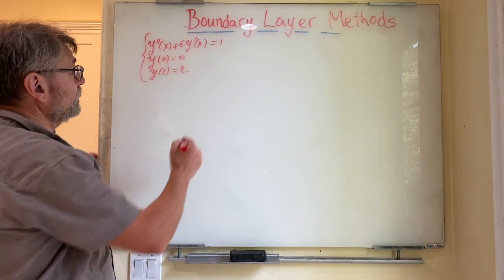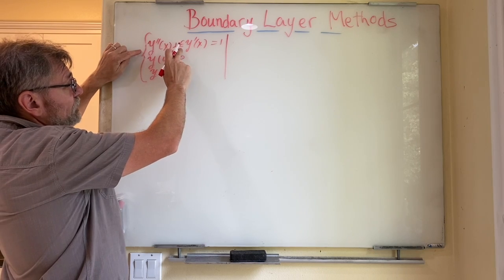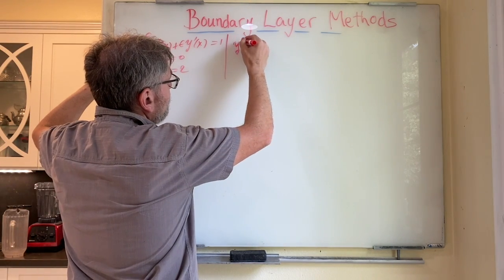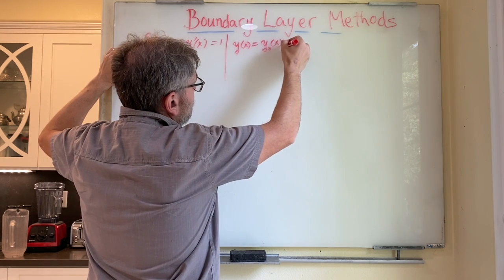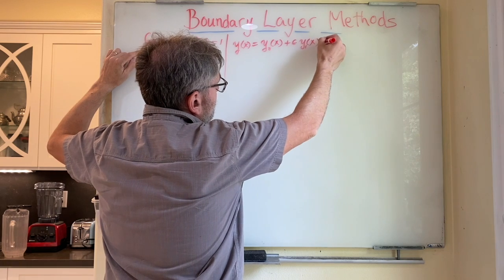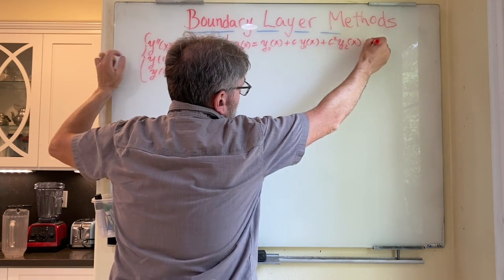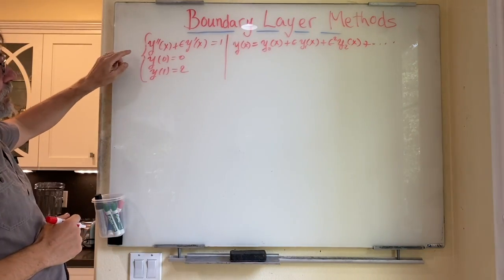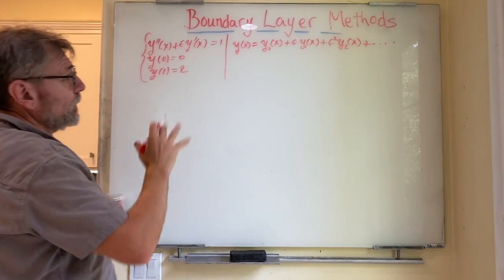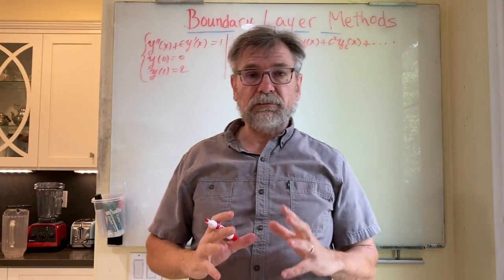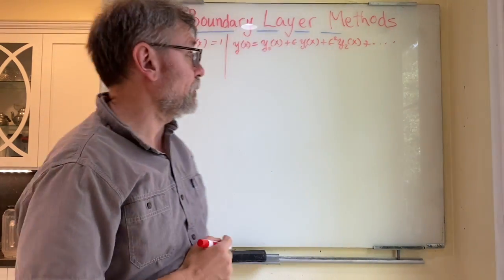As before, we're looking for a solution in powers of the small parameter epsilon. We'll try a solution of the form: y of x equals y naught of x plus epsilon y1 of x plus epsilon squared y2 of x plus and so on. We substitute into the equation, then equate all the like powers of epsilon and make sure the equation is satisfied at every order in epsilon, just like we did for the algebraic problem.